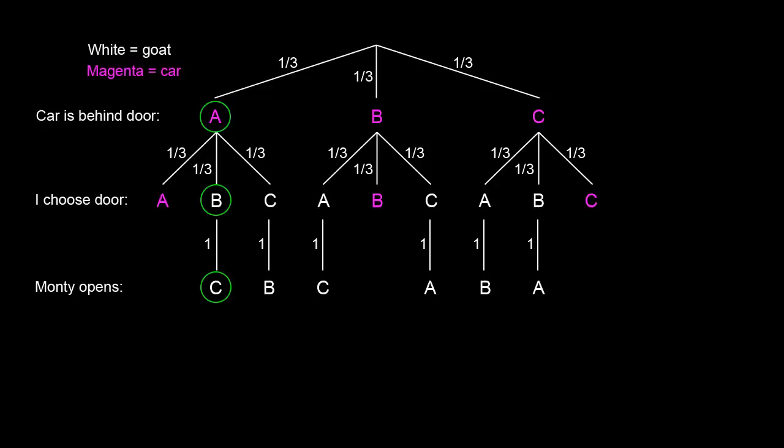For example, the car is behind door A. I choose the goat behind door B. Then Monty has no choice but to show me the goat behind door C. And there are six scenarios just like this.